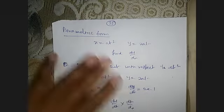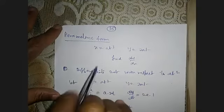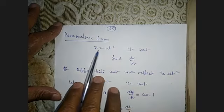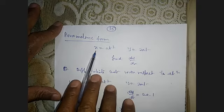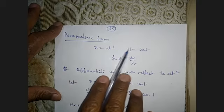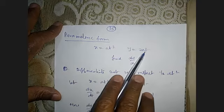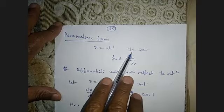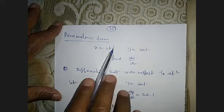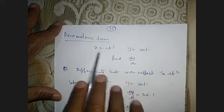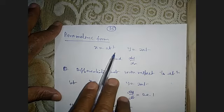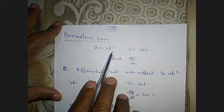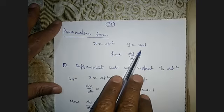What is the meaning of parametric form? Parametric form means here there are two variables that depend on a third variable. For example, x depends on t and y also depends on t — so x and y both depend on t. This form is called parametric form, and t is called its parameter.